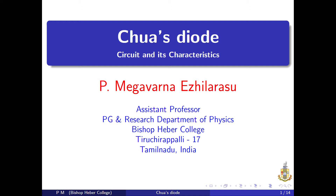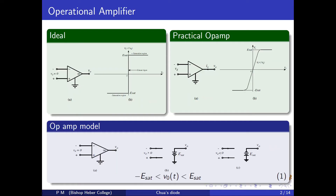Chua's Diode was invented by Leon Chua, who is also the inventor of Chua's circuit, in the year 1983. Before going to see the diode design, we have to know a little bit about the operational amplifier.